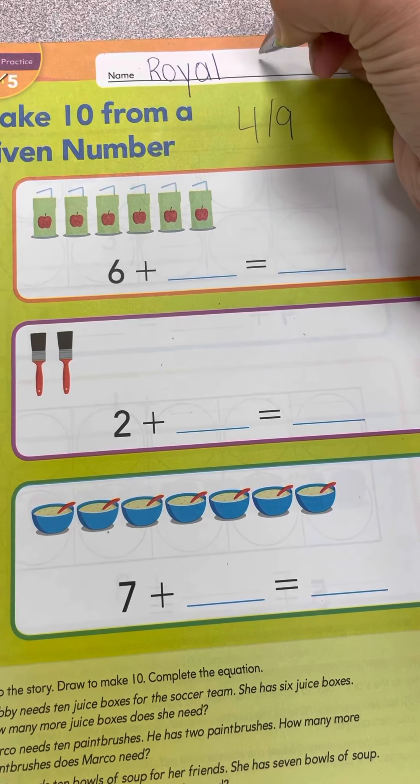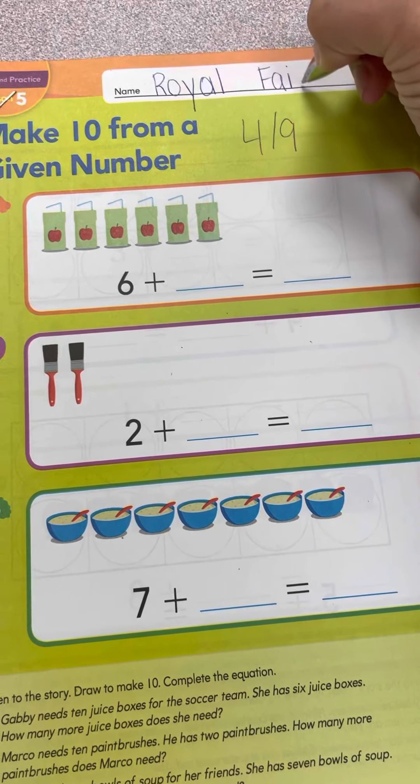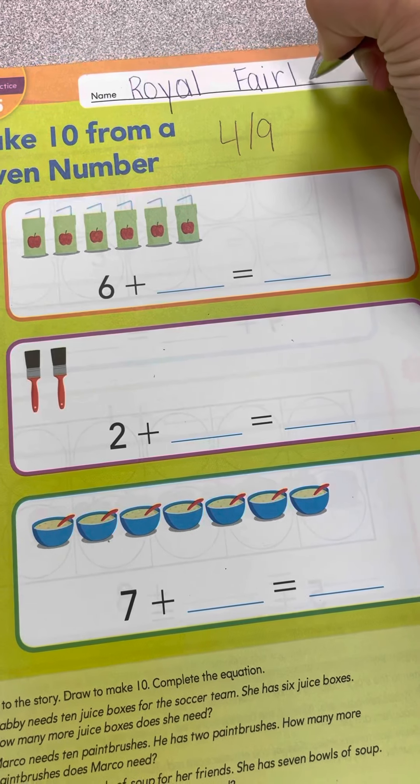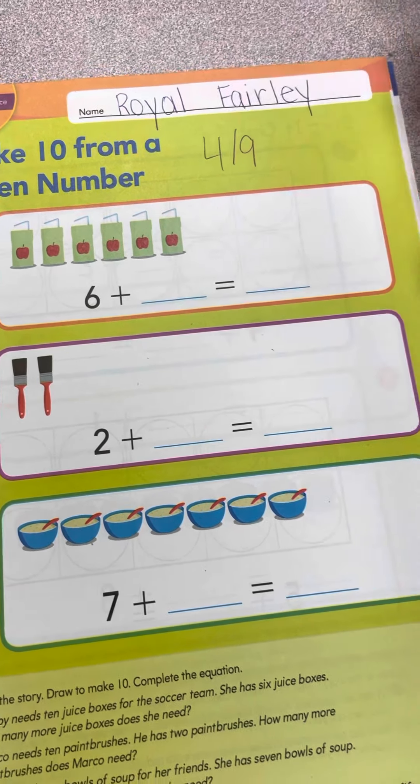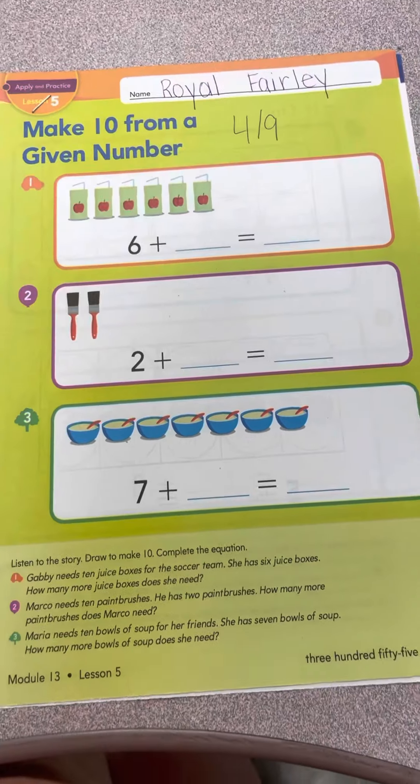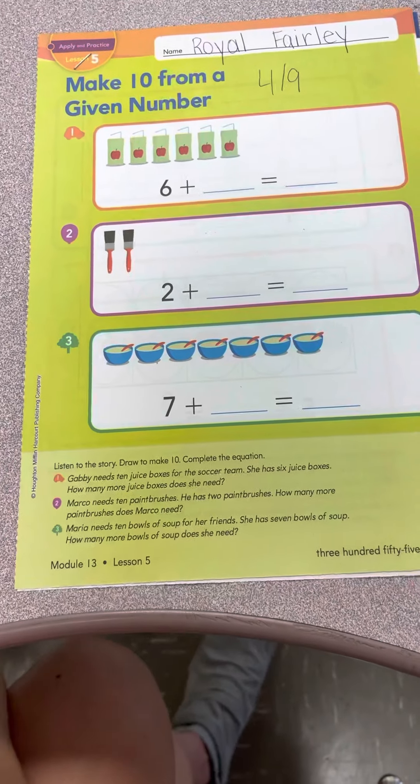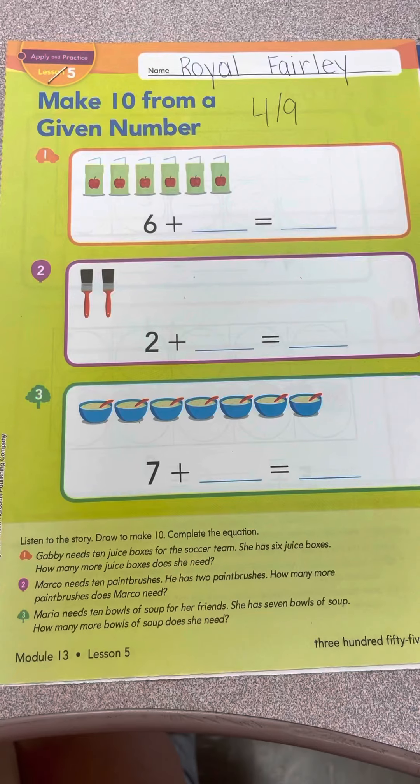R-O-Y-A-L. Fairley is his last name, F-A-R-L-E-Y. Royal Fairley. Remember in Kindergarten now we are writing our first and last name every time.